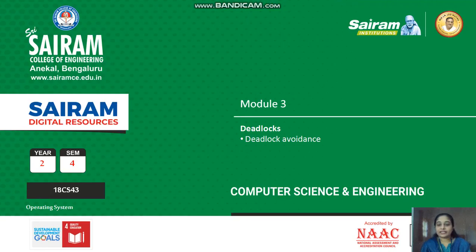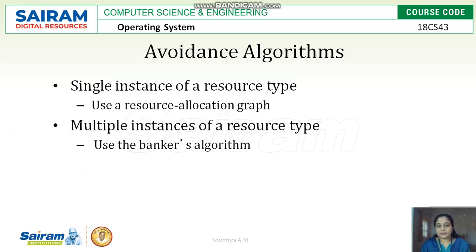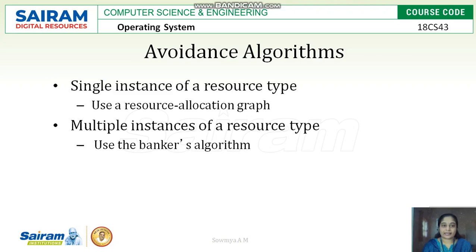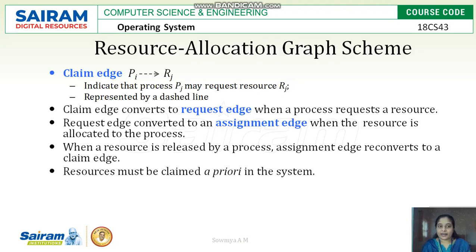In this video we will see deadlock avoidance. We have multiple deadlock avoidance algorithms. For a single instance of resource type, we use the Resource Allocation Graph, and if you have multiple instances of resource type, we can go for Banker's Algorithm. Resource Allocation Graph is only for single instances for all resources, as the problem is simpler and we can go for a simpler solution.